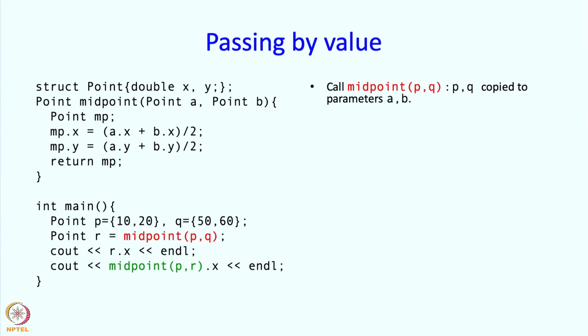The arguments p and q are copied to the parameters a and b. This is the call and these arguments p, q are copied to these parameters a and b and now the code of midpoint starts executing. The first step is that a local structure mp of type point is created and this is created in the activation frame of this function midpoint. Its x and y variables are set suitably, so they are set to the mean of the x and y coordinates of points a and b and then this mp is returned.